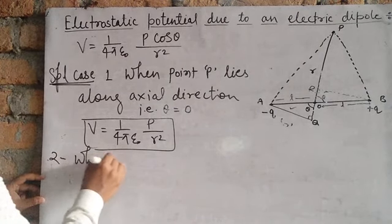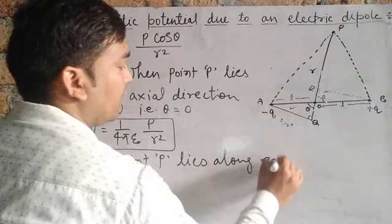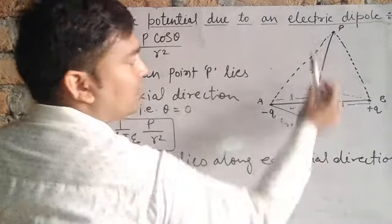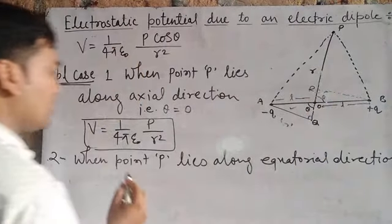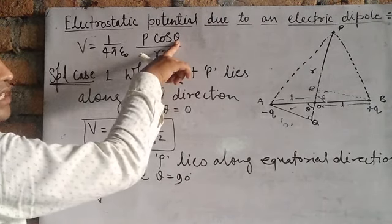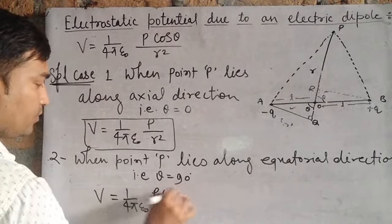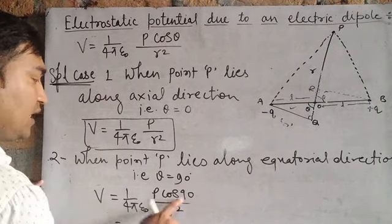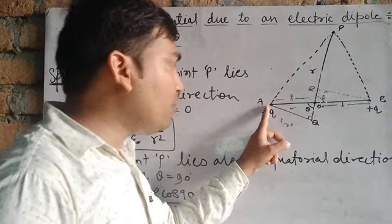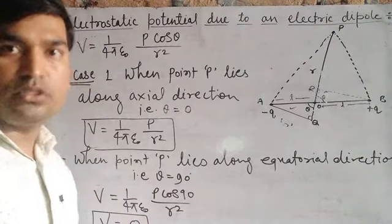Special case two: when point P lies along the equatorial direction, theta equals 90 degrees. Substituting, cos 90 equals 0, so the whole potential V equals 0. This is zero because on the equatorial line the distances from A to P and B to P are equal, so the negative potential and positive potential cancel each other out, giving zero net potential.